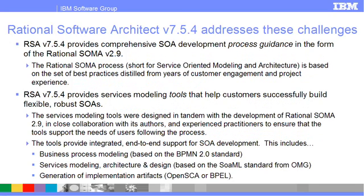RSA 7.5.4 provides comprehensive SOA development process guidance in the form of Rational SOMA version 2.9. The Rational SOMA process, short for Service-Oriented Modeling and Architecture, is based on a set of best practices distilled from years of customer engagement and project experience. RSA 7.5.4 provides services modeling tools that help customers successfully build flexible, robust, service-oriented architectures.